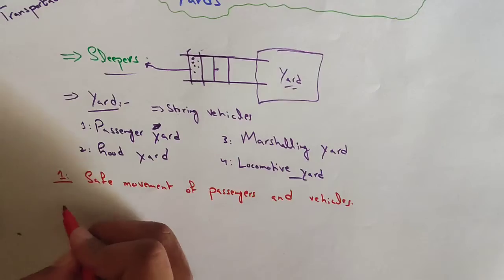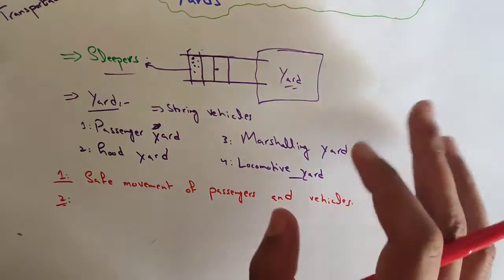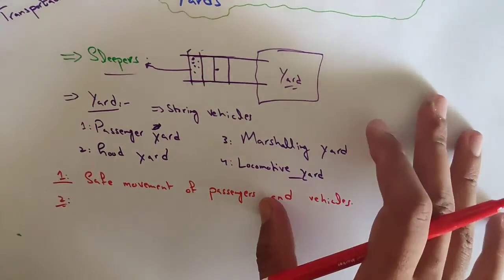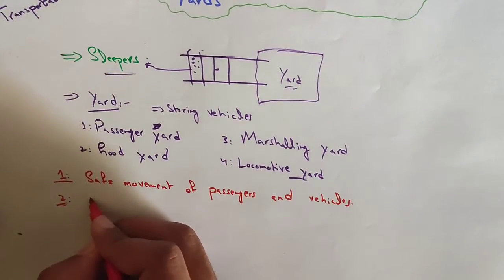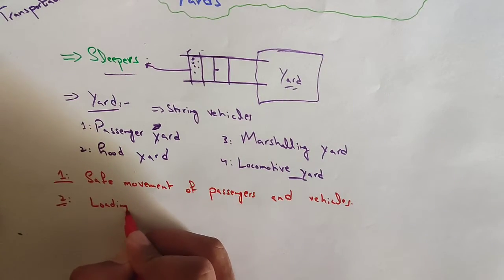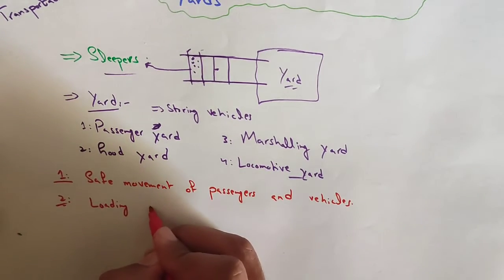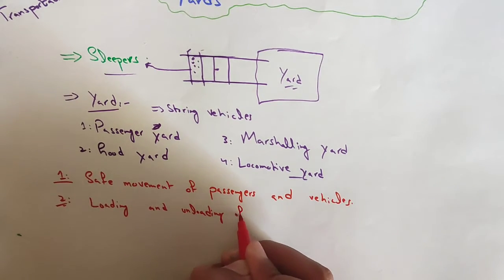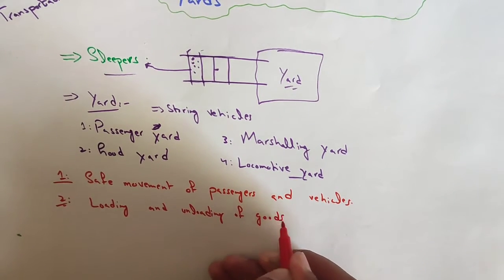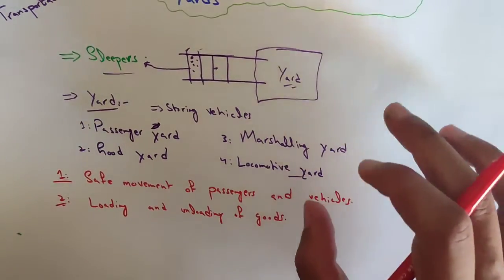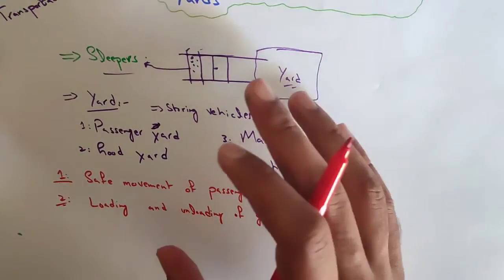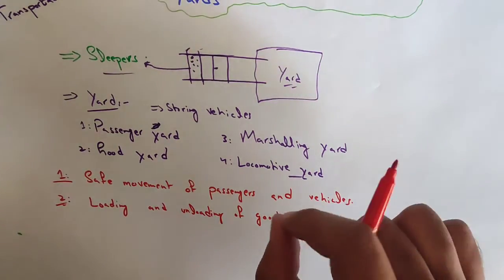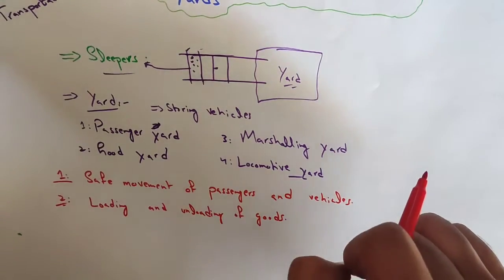The second one is goods yard. As the name represents, these are provided for receiving, loading, and unloading of goods. It is practically not possible to load or unload goods on rail at every point of your choice.